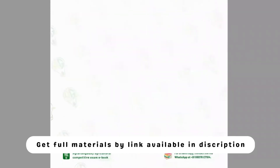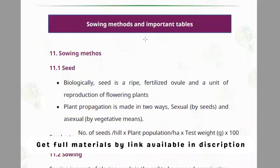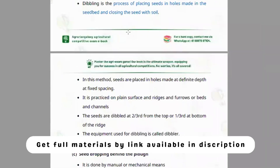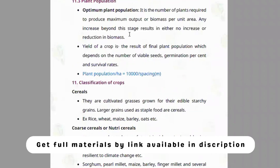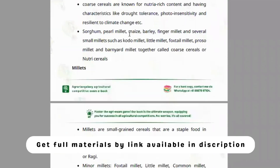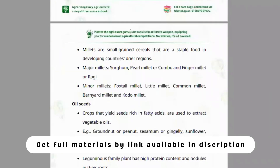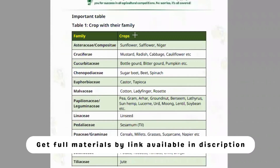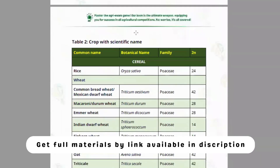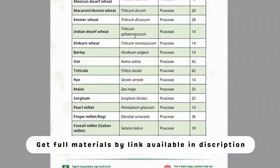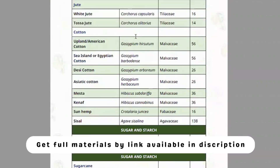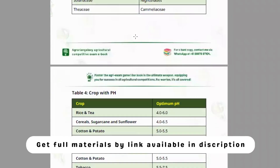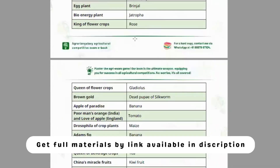Module eleven covers sowing methods — drilling, transplanting, and planting. The classification of crops is explained: cereals, millets, major millets, minor millets, pulses, fiber crops, and narcotics and beverages. There are around 40 important tables including scientific names, family names, crop pH ranges, and famous names of crops.